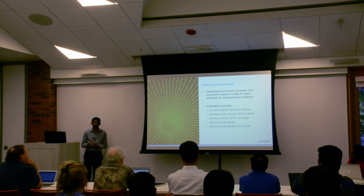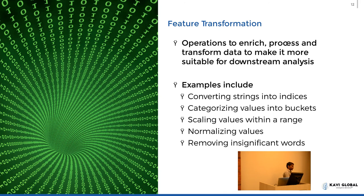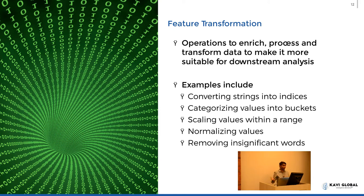Feature transformation is probably the most important thing, because as analytics professionals we spend almost 70% of our time doing this, as opposed to the actual modeling which is done much faster. Feature transformation means changing or manipulating the data so that it gets transferred to the form and shape we want for the model. Examples include converting a string into an index, handling outliers by bringing them into a range of values, normalizing values into a distribution, and removing stop words like prepositions when doing text mining analysis. These come under the bucket of capabilities called feature transformations.